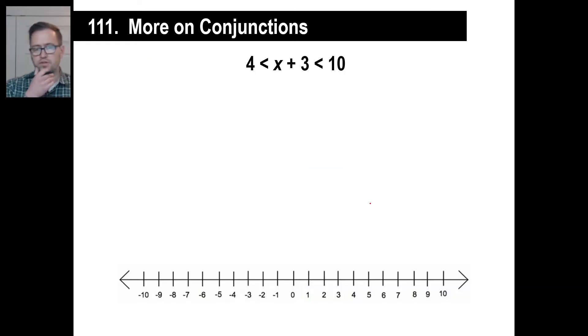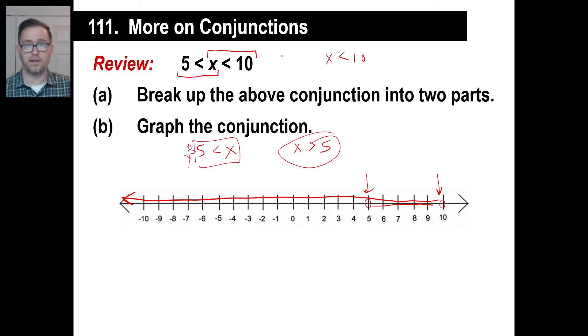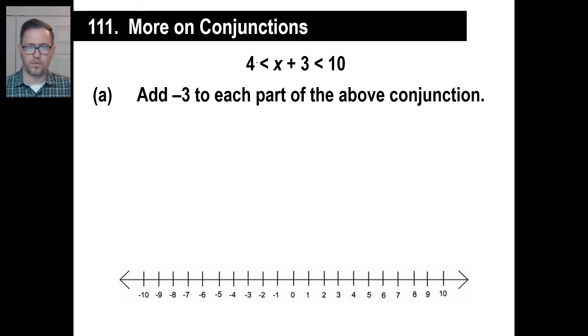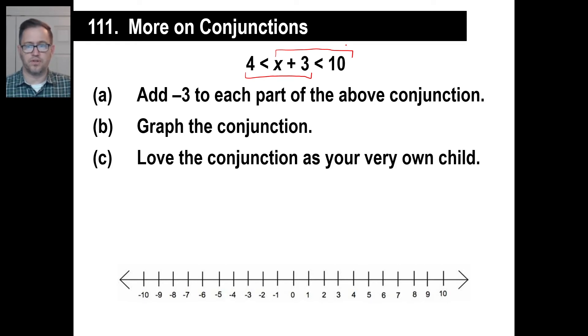We're going to add a little twist to this, which is this. In other words, we don't have just an x in the middle of those two like we did on this one. We have an x plus 3 or whatever they give you. The trick to doing this, let me tell you the three steps. Number one, if you want to write this down, you can. Add negative 3 to each part of the above conjunction, just like each one is its individual inequality, almost like an equation. There's an equation, there's an equation. Do the same thing. Graph it. Last step is love the conjunction as your very own child. That's optional. This is an optional step. Let's at least do a and b.